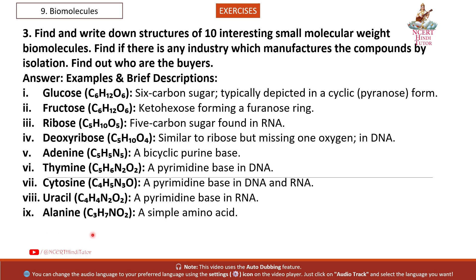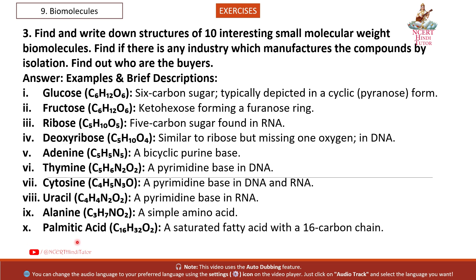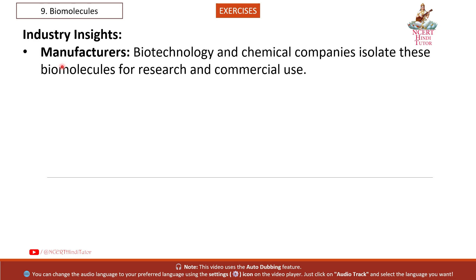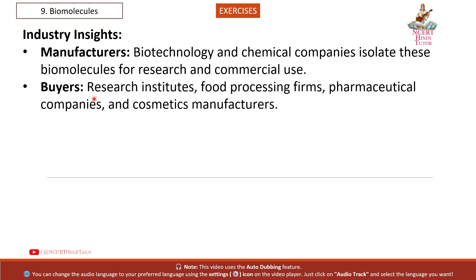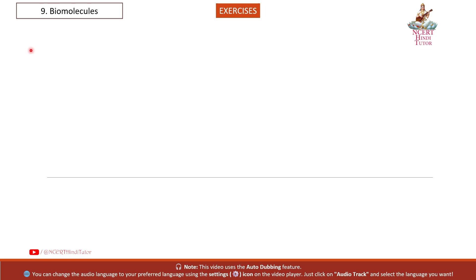9. Alanine (C3H7NO2): a simple amino acid. 10. Palmitic acid (C16H32O2): a saturated fatty acid with a 16-carbon chain. Industry insights — manufacturers: biotechnology and chemical companies isolate these biomolecules for research and commercial use. Buyers: research institutes, food processing firms, pharmaceutical companies, and cosmetics manufacturers.